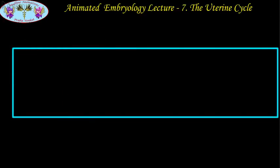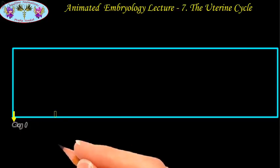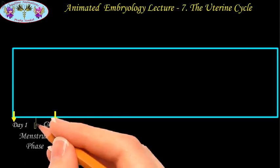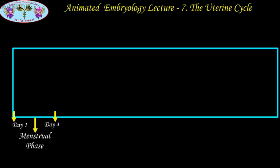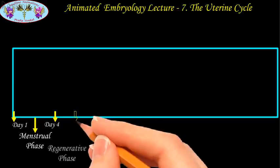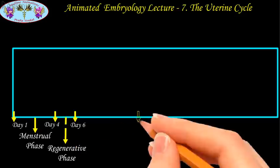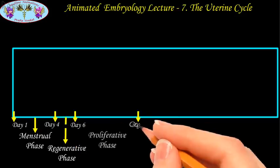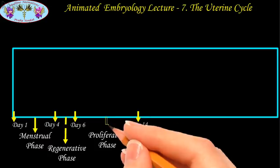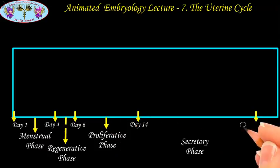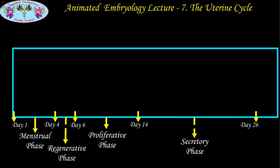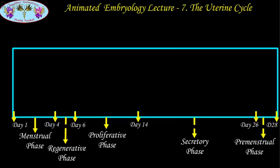The successive endometrial changes in the uterine cycle are subdivided into the following phases: first is the menstrual phase, which occurs from the first to the fourth day; followed by the regenerative phase on the fifth and sixth day; then the proliferative phase from the sixth to the fourteenth day; the secretory phase from the 15th to the 25th day; and lastly the premenstrual phase from the 26th to the 28th day.